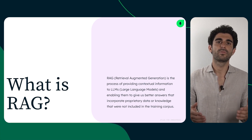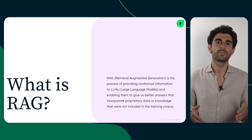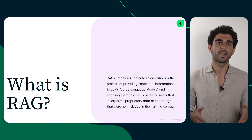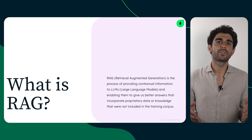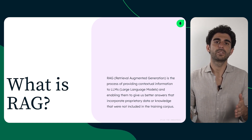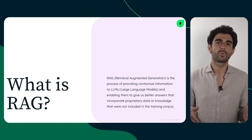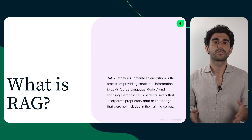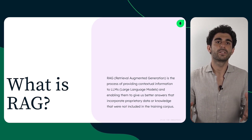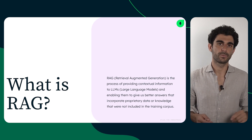RAG is the process of providing contextual information to large language models, or LLMs, and enabling them to give us better answers that incorporate proprietary data or knowledge that were not included in the training corpus.